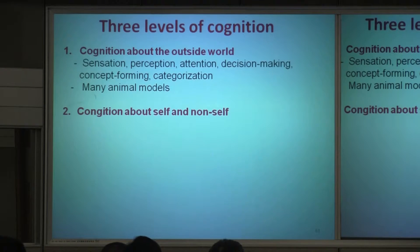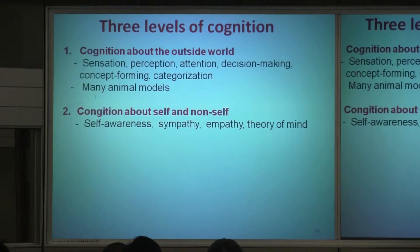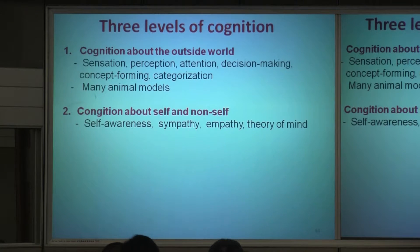I know I'm here standing. I know you are listening. I have to have the concept of myself and of you — other people. These concepts include self-awareness, sympathy and empathy. I know what you are thinking about; I have the same thinking — this is empathy. Theory of mind: I know what you are thinking — theory about your mind. All these are important aspects of the concept of self and non-self.